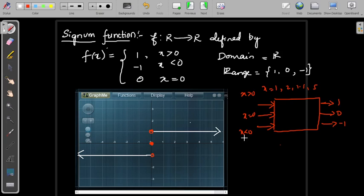When you give any negative values like minus 1000, minus 2000, minus 1, minus 5, output is always minus 1. When you give input as 0, output is equal to 0.